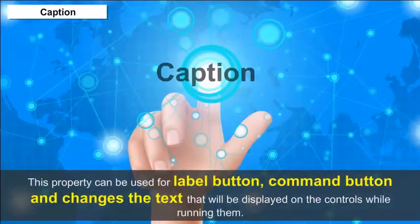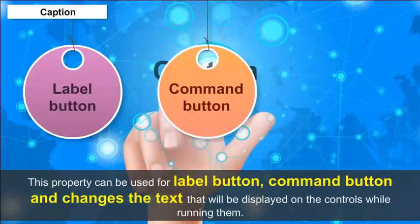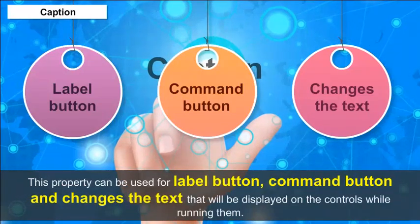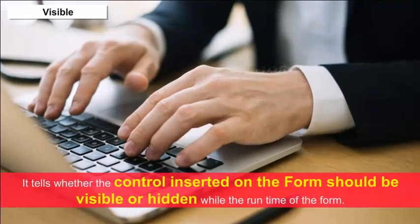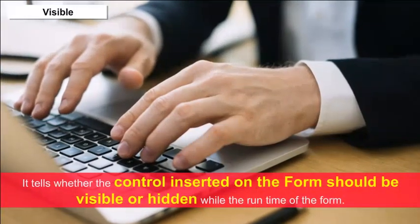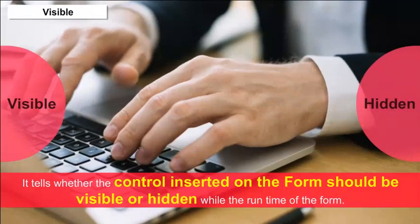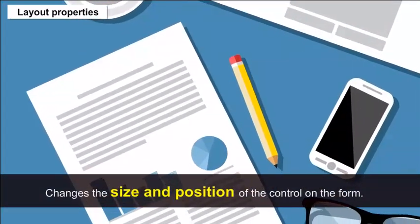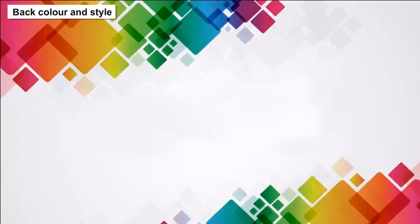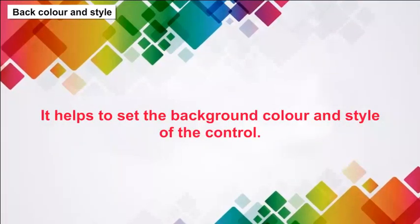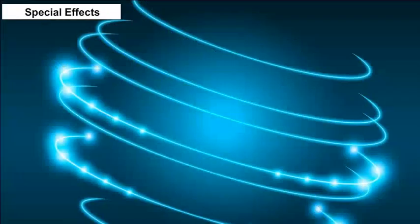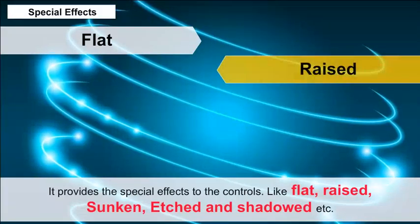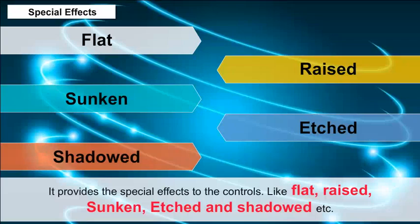Caption: This property can be used for label and command buttons, changing the text displayed on the controls while running. Visible: It tells whether the control on the form should be visible or hidden at runtime. Layout Properties: Changes the size and position of the control on the form. Back Color and Style: Helps to set the background color and style. Special Effects: Provides special effects to the control, like flat, raised, sunken, etched and shadowed.